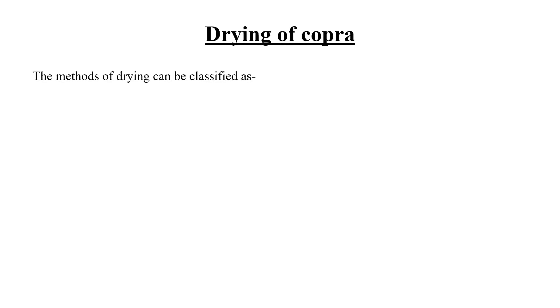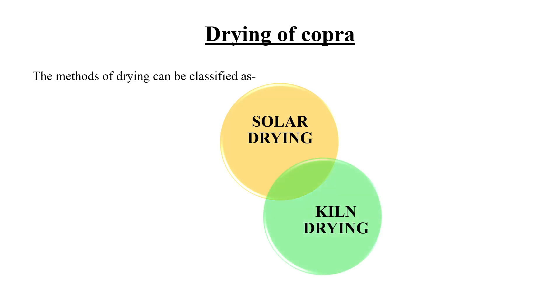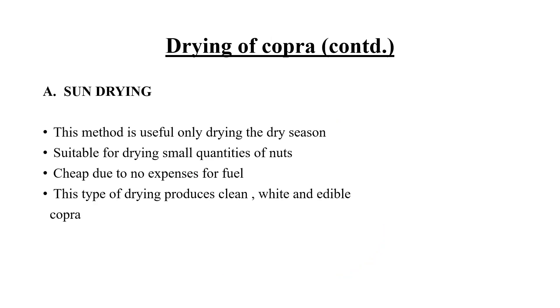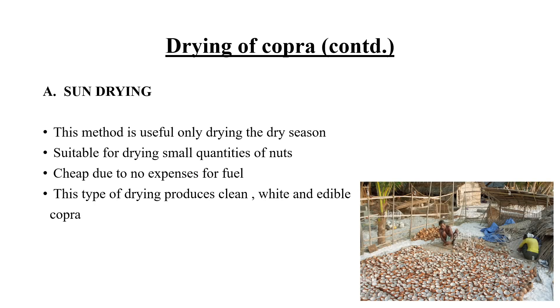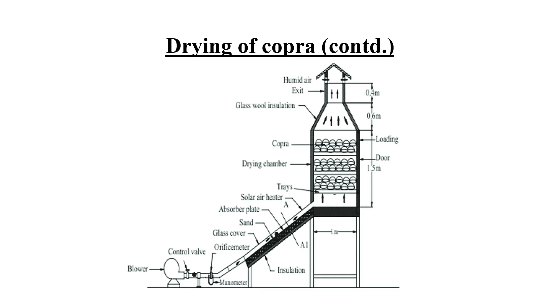Drying of copra is done by three methods: solar drying, kiln drying, and hot air drying. In sun drying, the copra or the split nut is dried using solar power. This is usually practiced in the dry season or summer season. It is a cheaper method and no expenses for fuel are required.